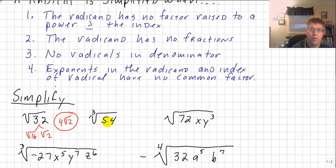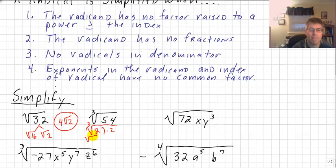For the cube root of 54, we ask: what is the highest perfect cube factor of 54? That is 27, so we get the cube root of 27 times 2, which splits into the cube root of 27 times the cube root of 2. The cube root of 27 is 3, so our final answer is 3 times the cube root of 2. That's a lot of 3's!